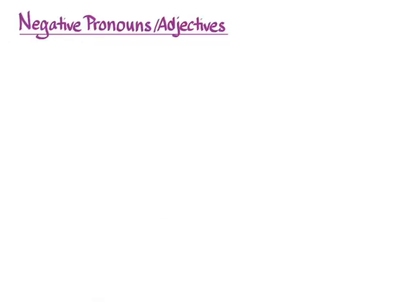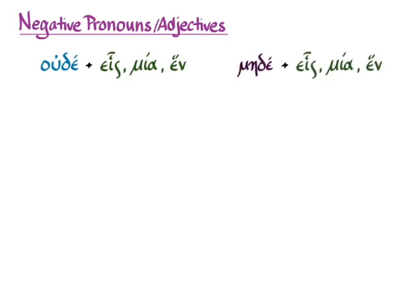Now that you know heis, mia, hen — the word for one — you can add it to ouda, the word for 'and not,' and you get the compound negative 'no one.' We can do the same thing with mayda for those times when your sentence or clause requires a may form rather than an ou form.